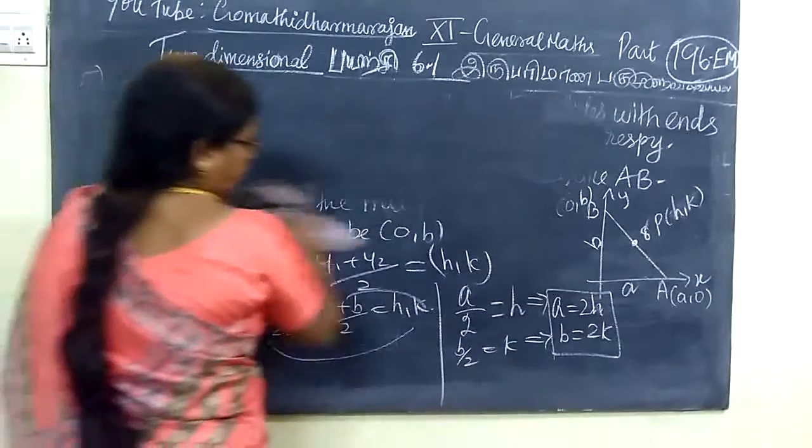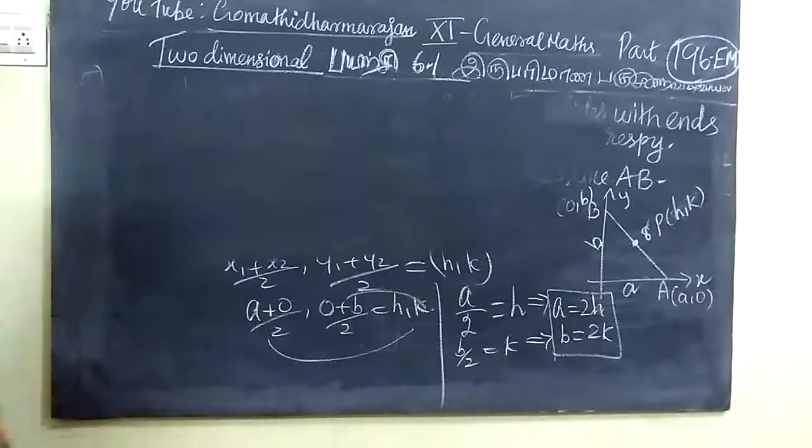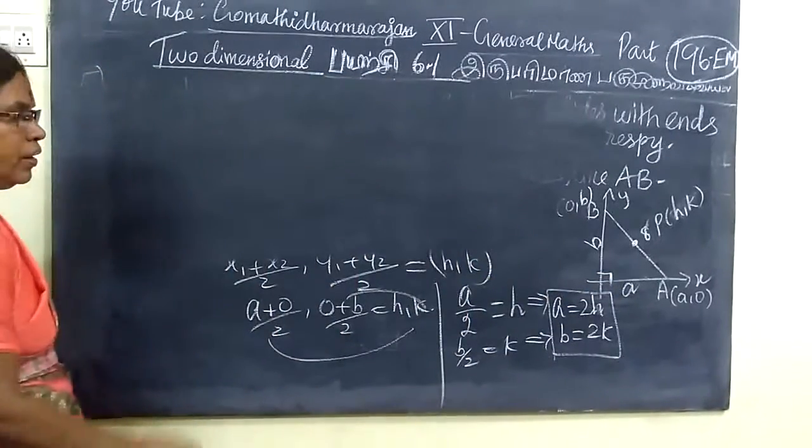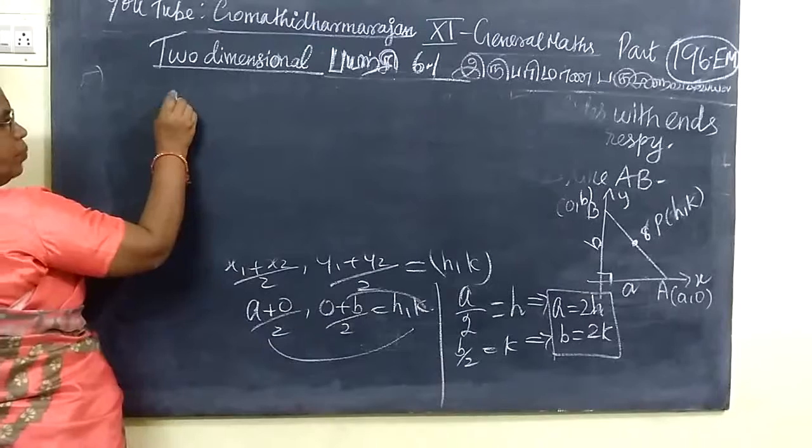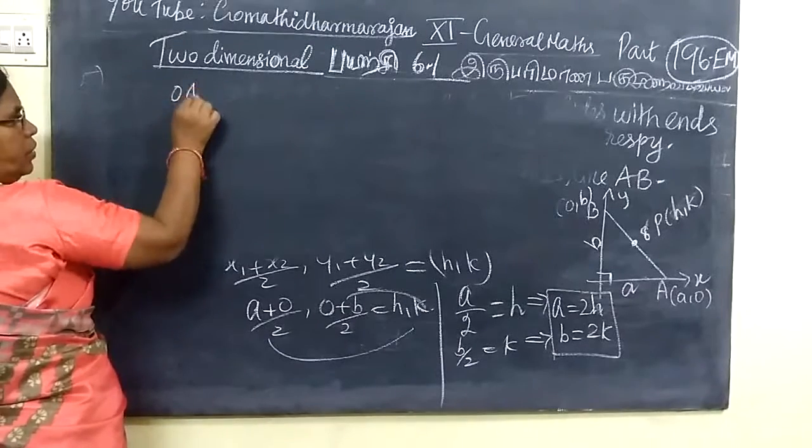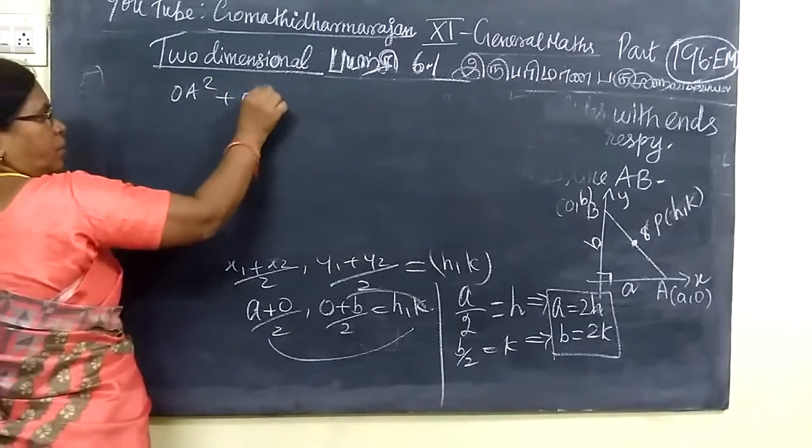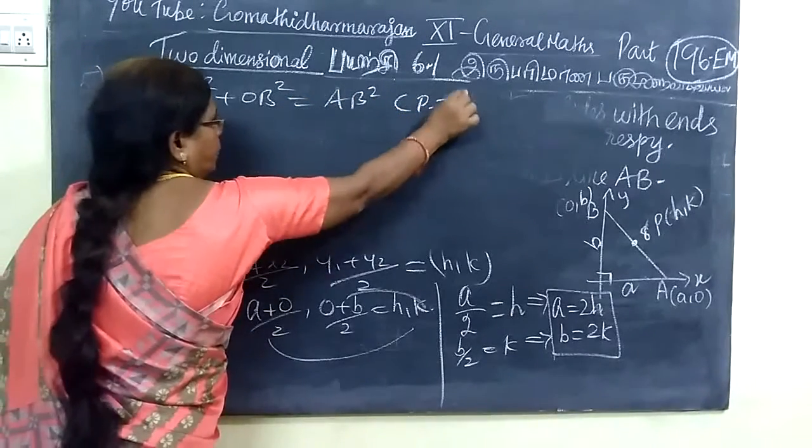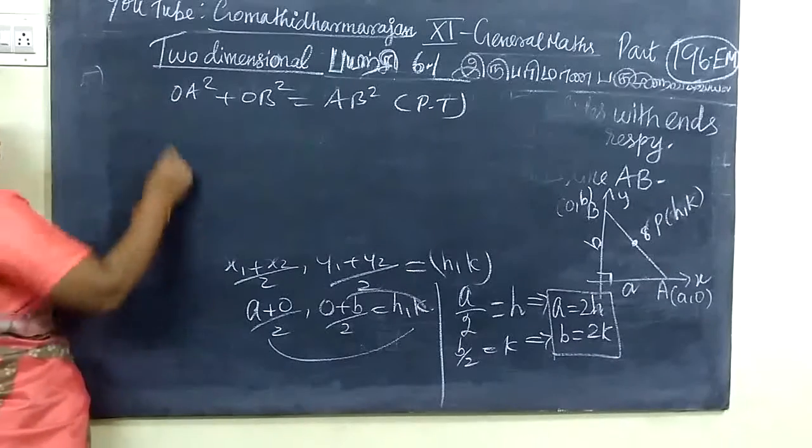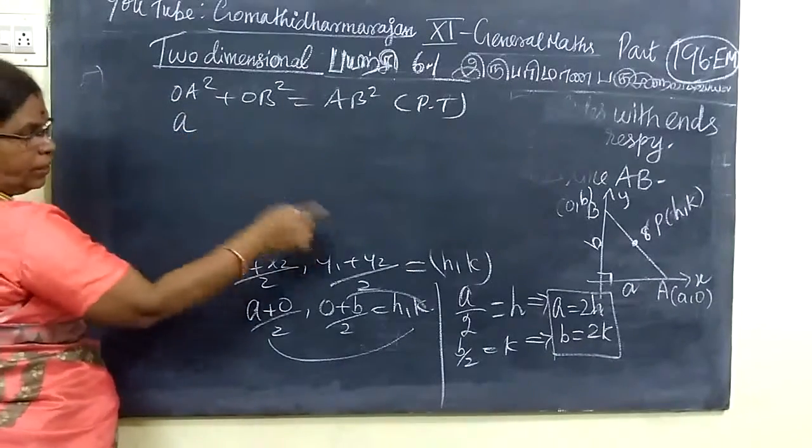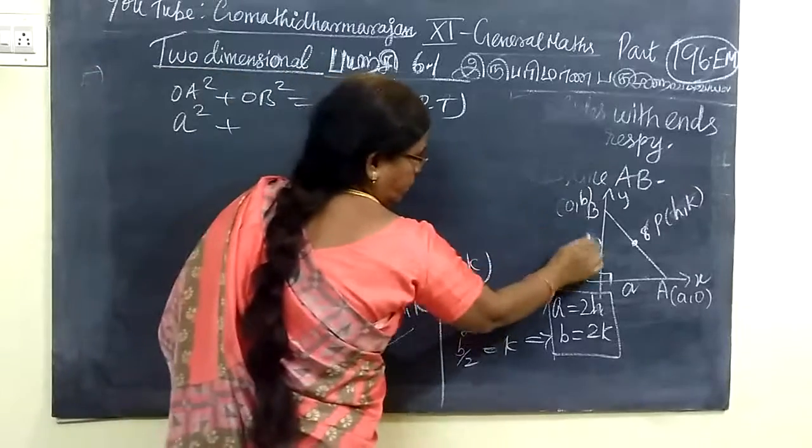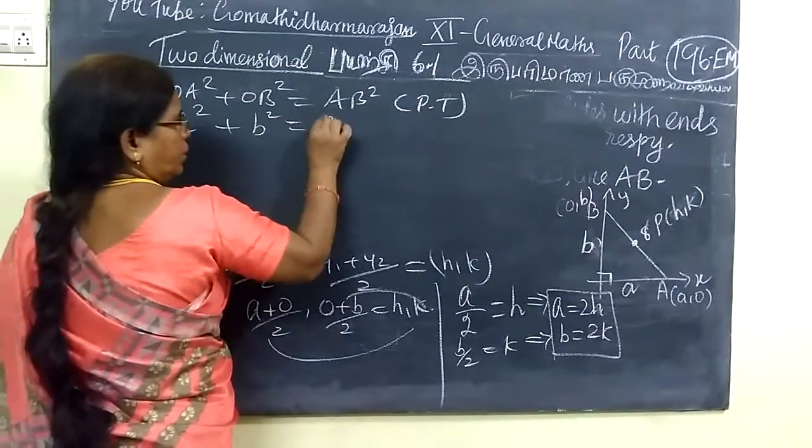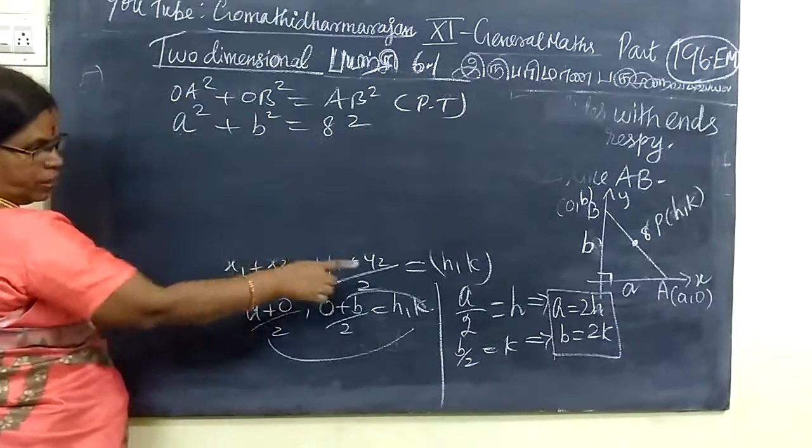Now the triangle is a right angle triangle. Since it's a right angle triangle, we know by Pythagorean theorem, OA square plus OB square equals hypotenuse square. OA distance is a, so a square. OB distance is b, so b square equals AB square.